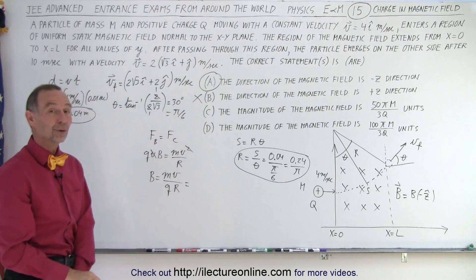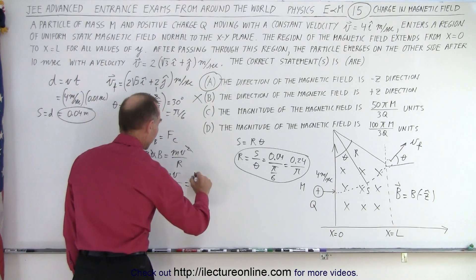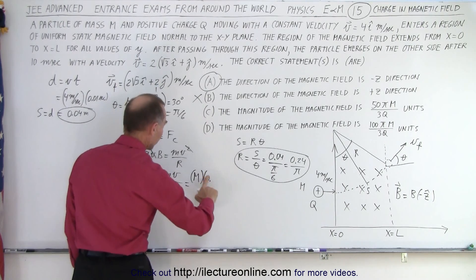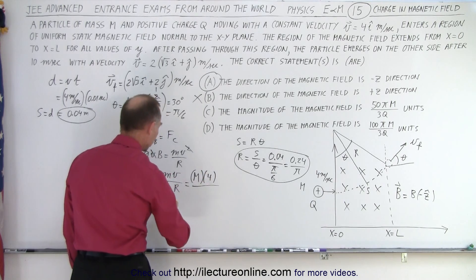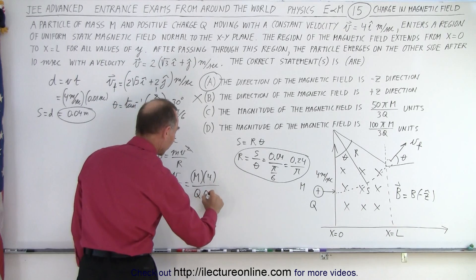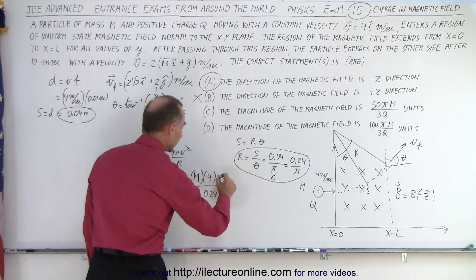So we have the mass m, velocity is going to be 4, divided by q, which is q, and r, which we found to be 0.24 divided by pi. But then the pi goes to the numerator. Getting rid of decimal points, always like to get rid of decimals, so multiply both the top and the bottom by 100.